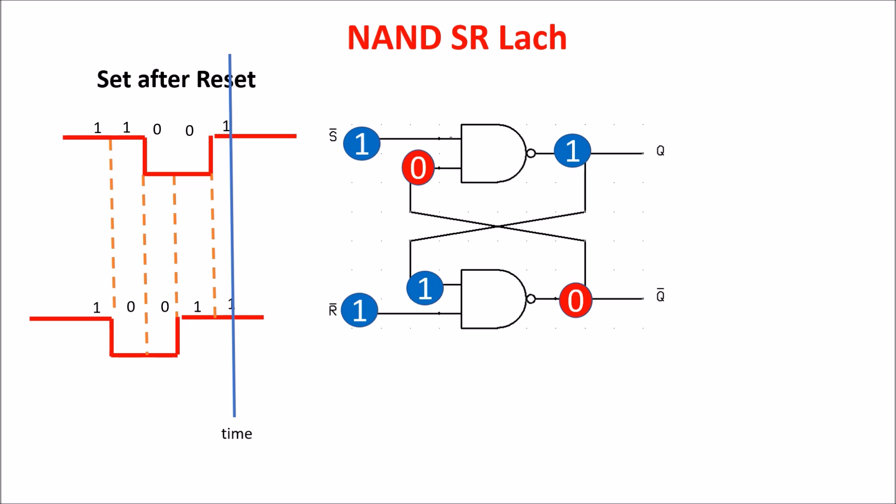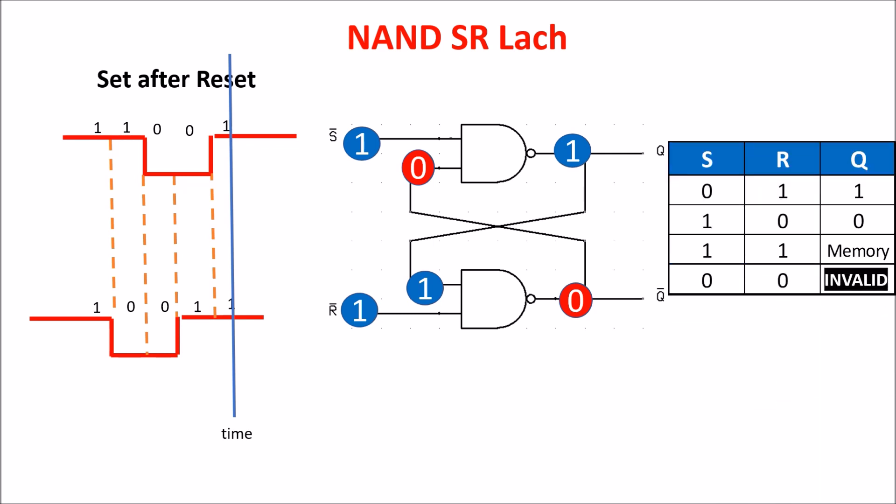If set had arrived before the reset, Q would have been 0 and Q bar 1. For this reason in the 0-0 situation we cannot control the output, so it is not used, being considered invalid.